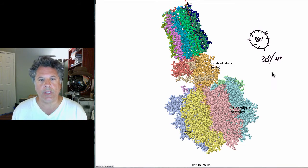We know that one 360 degree rotation of the rotor will drive a 360 degree rotation of the axle, which will then cause the production of three ATPs, one per each catalytic subunit.